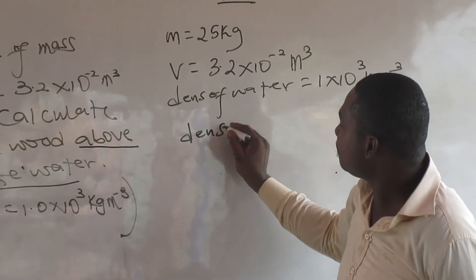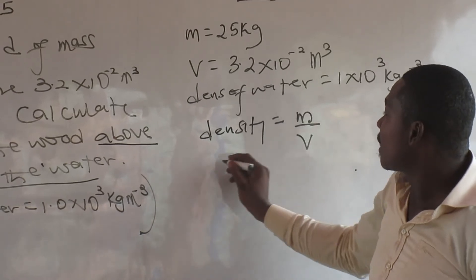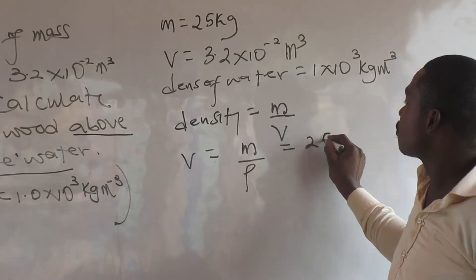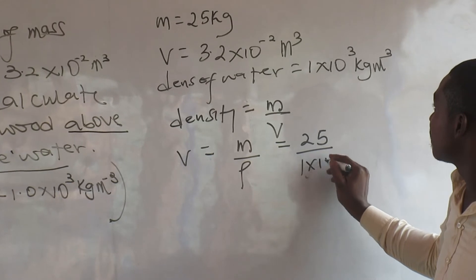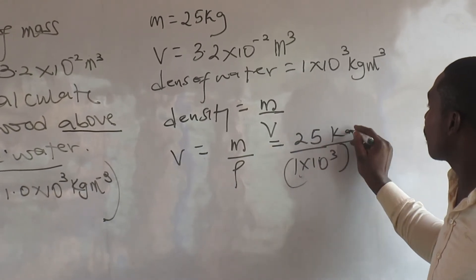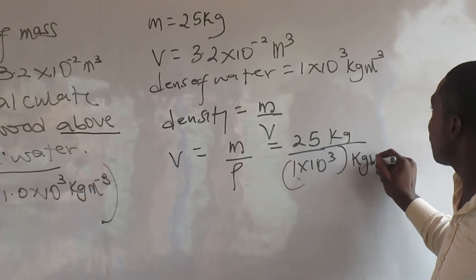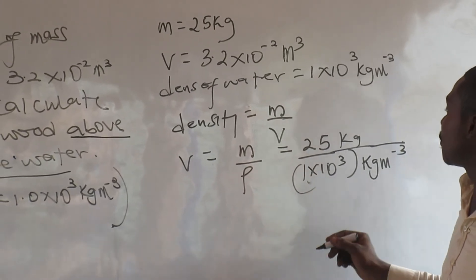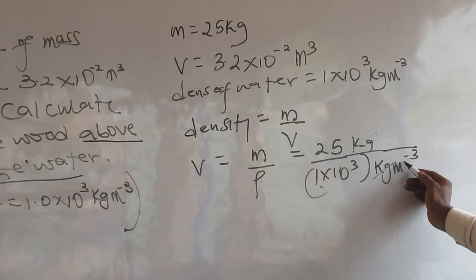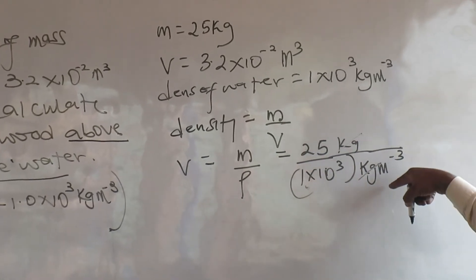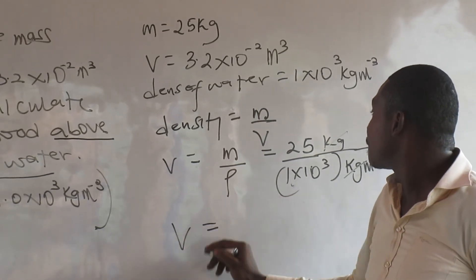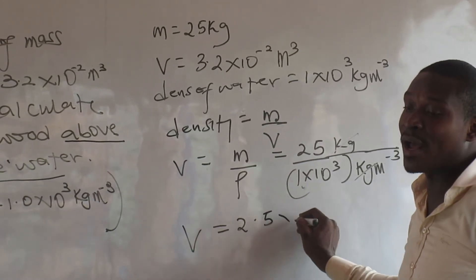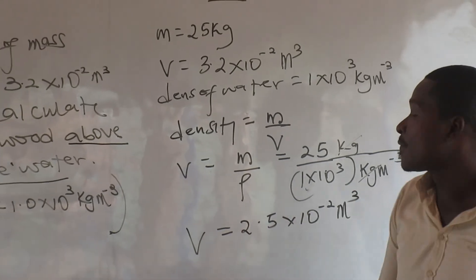Using the formula: density equals mass over volume, we rearrange to get volume equals mass over density. Mass is 25 kilograms, density of water is 1 times 10³ kilograms per cubic meter. So volume equals 25 divided by 1×10³. This gives 2.5 times 10 to the power minus 2 cubic meters. That is the volume of the wood submerged in water.